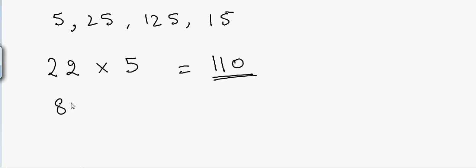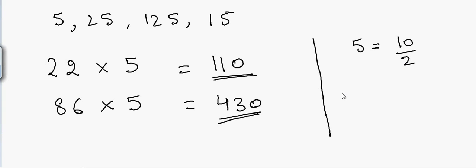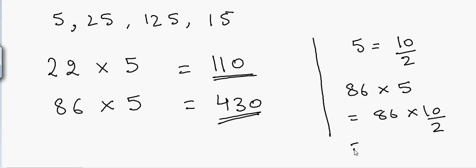Again, let's say I have 86 and I want to multiply it by 5. All I will do is 86 divided by 2, which is 43, and then put a 0 at the end, so that will be 430. The concept is very easy: 5 is equal to 10 divided by 2. So if I multiply 86 by 5, that is equal to 86 times 10 divided by 2.